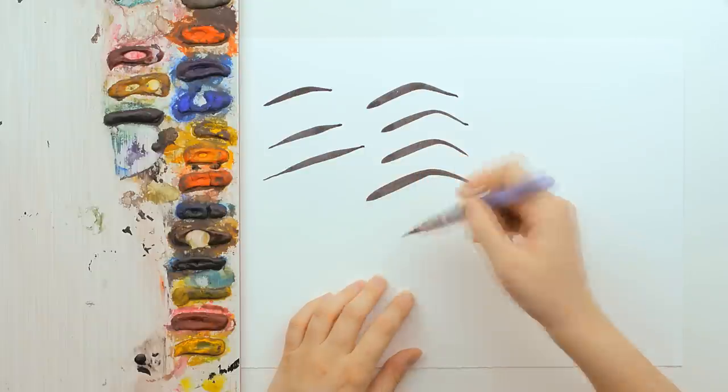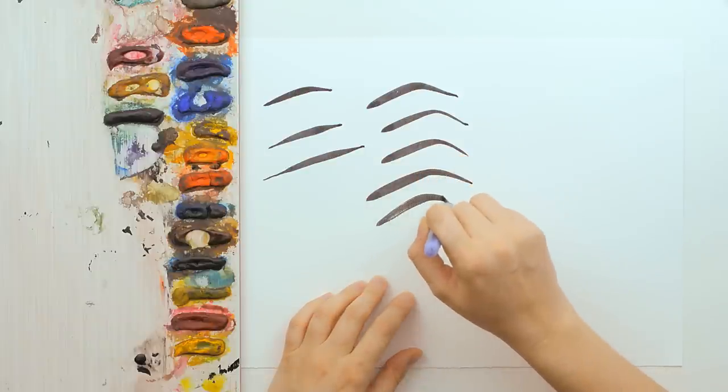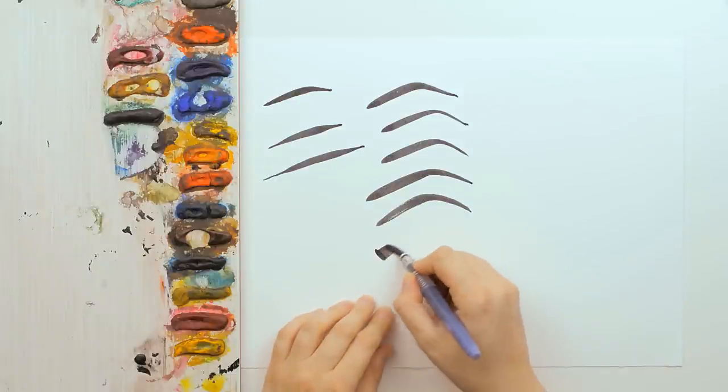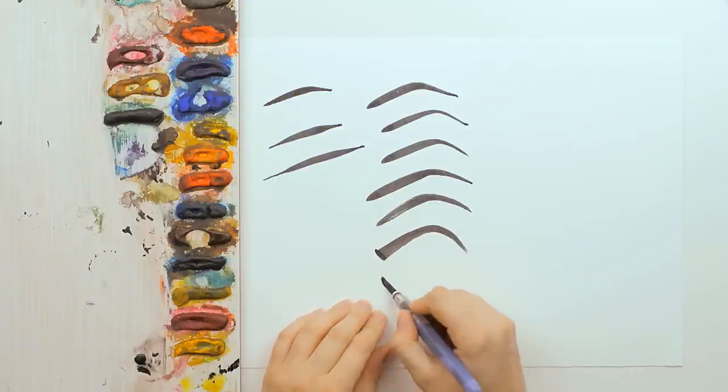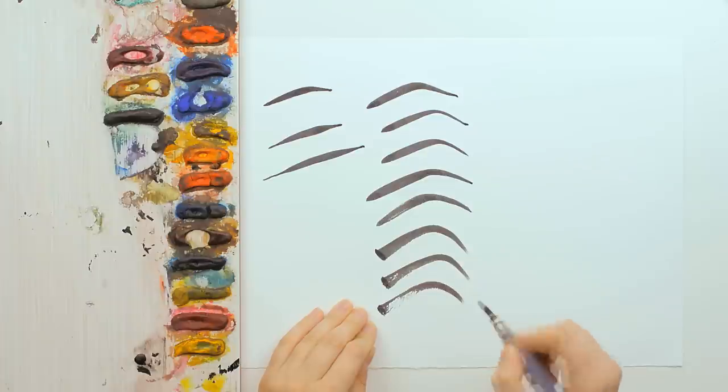Another exercise is to trace curved lines, from thick to thin lines. Make sure you will press harder with the flat part of your brush and then lift your brush up. You will see the line becoming more and more thinner.